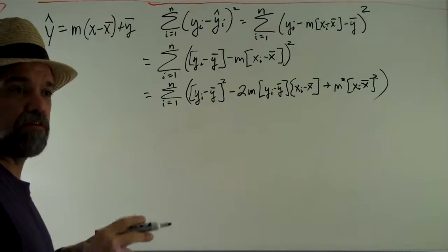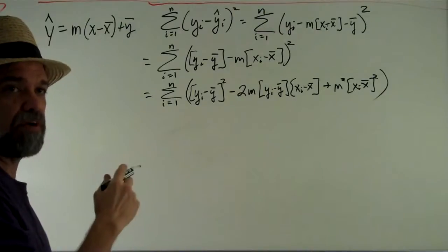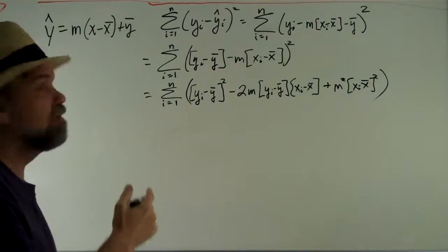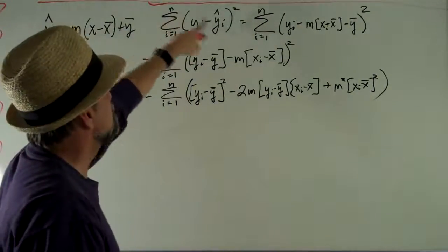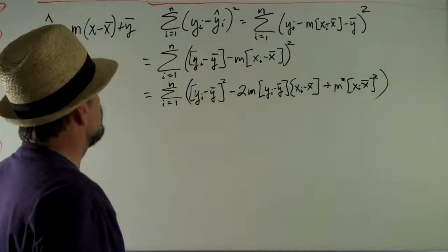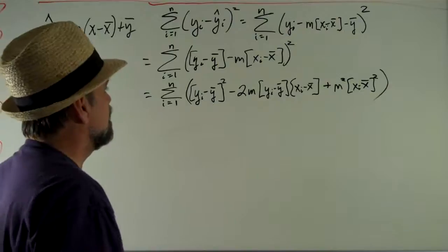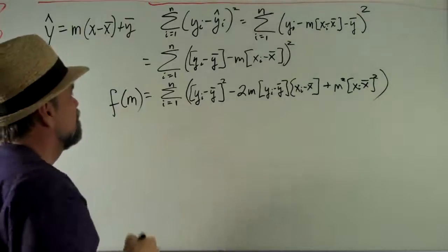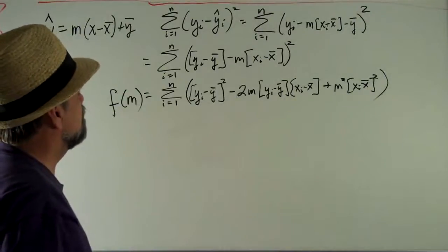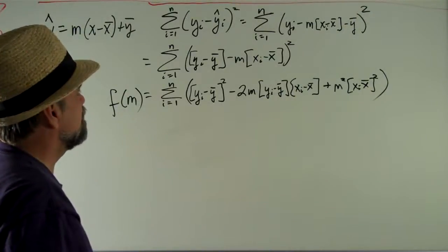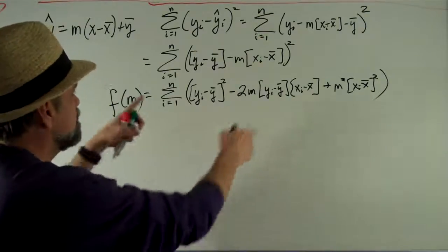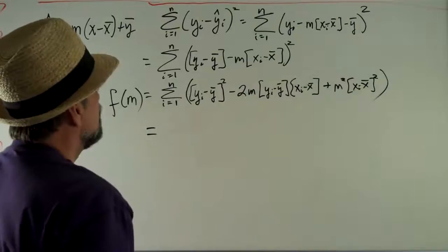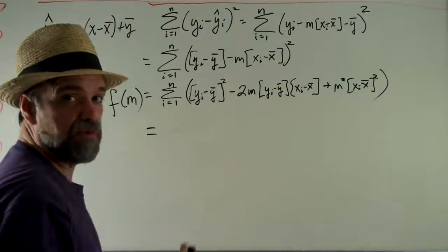We've already got our y-intercept defined. All we're looking for is the slope that minimizes the sum of squares. Really what I can think of this as is a function of m. When I think of it that way, let me turn things around a little bit and split apart this sum.